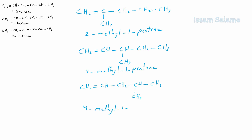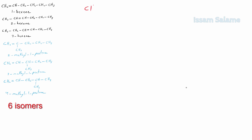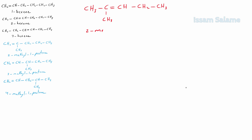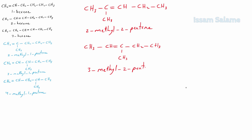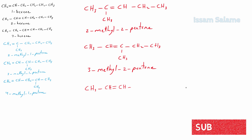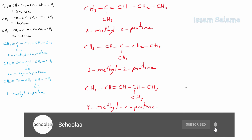What if we draw pentene with the double bond at the second carbon? Again, we cannot add the methyl at the end carbons, so we have three possibilities: methyl at the second carbon — called 2-methyl-2-pentene; methyl at the third carbon — called 3-methyl-2-pentene; and methyl at the fourth carbon — called 4-methyl-2-pentene. Since we cannot have 3-pentene, let's move on to four carbon atom chain alkenes.